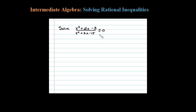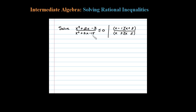Here I'm asked to solve this rational inequality. The first thing I'd like to do is factor the numerator and the denominator. The numerator factors as x times x minus 1 times x plus 3, since negative 1 times 3 is negative 3 and they add up to 2. For the denominator, x squared minus 2x minus 15 factors as x minus 5 times x plus 3, since negative 3 times positive 5 is negative 15.